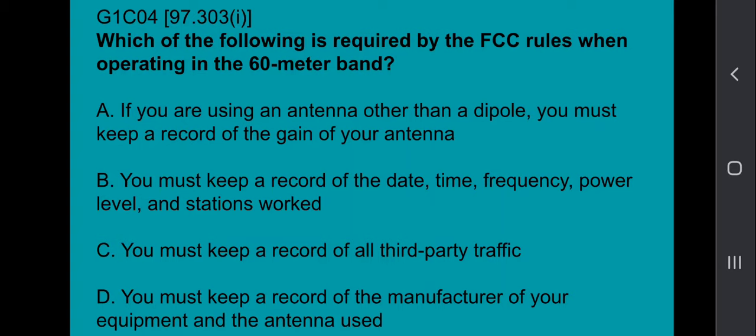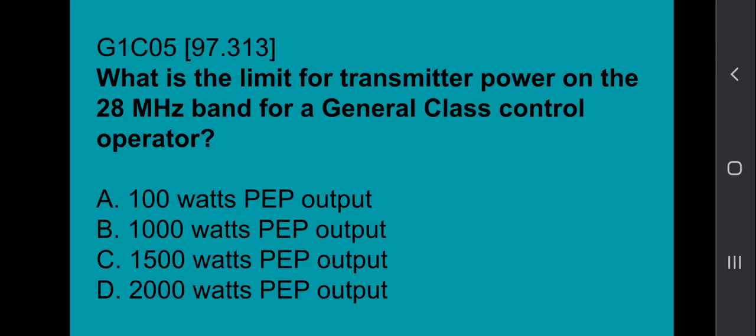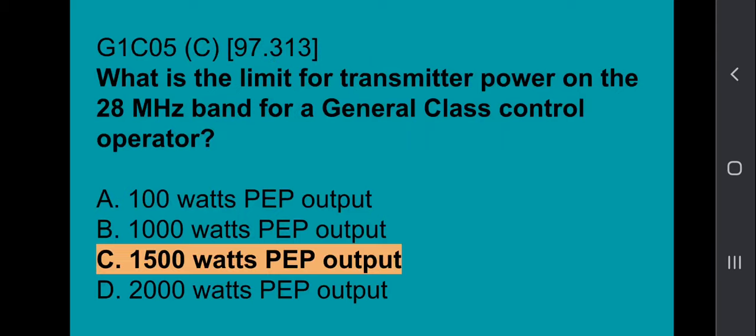G1C04: Which of the following is required by the FCC rules when operating in the 60-meter band? If you're using an antenna other than a dipole, you must keep a record of the gain of your antenna. G1C05: What is the limit for transmitter power on the 28 MHz band for a general class control operator? That's 1500 watts PEP output.